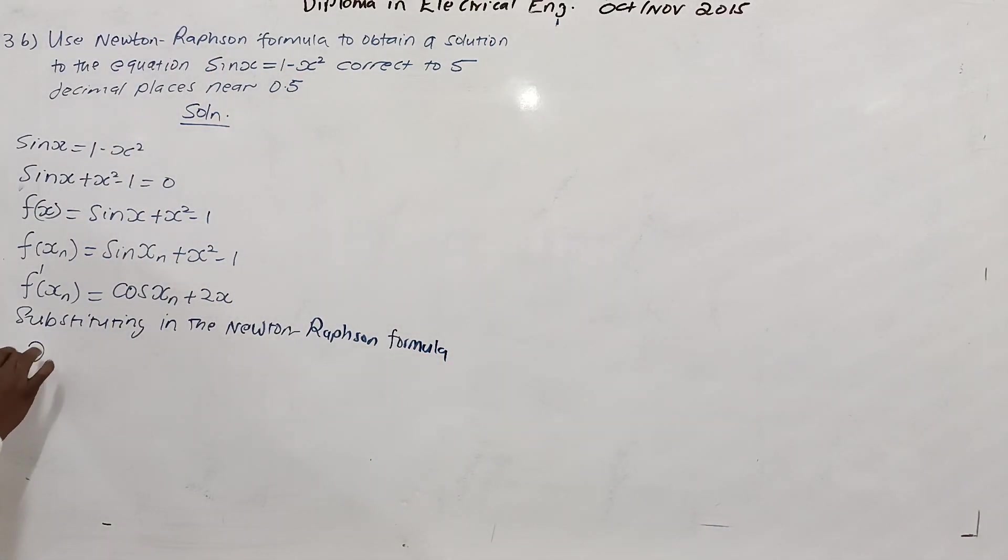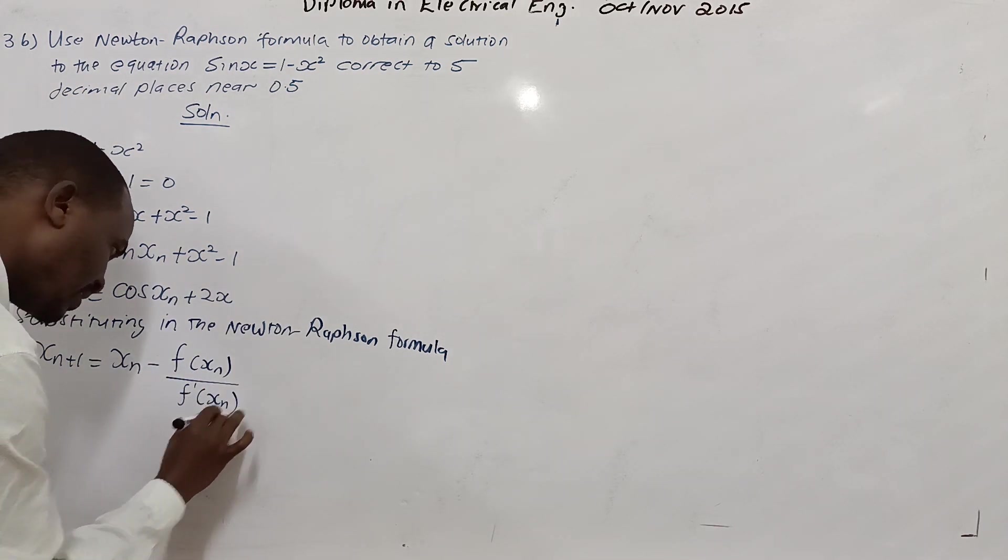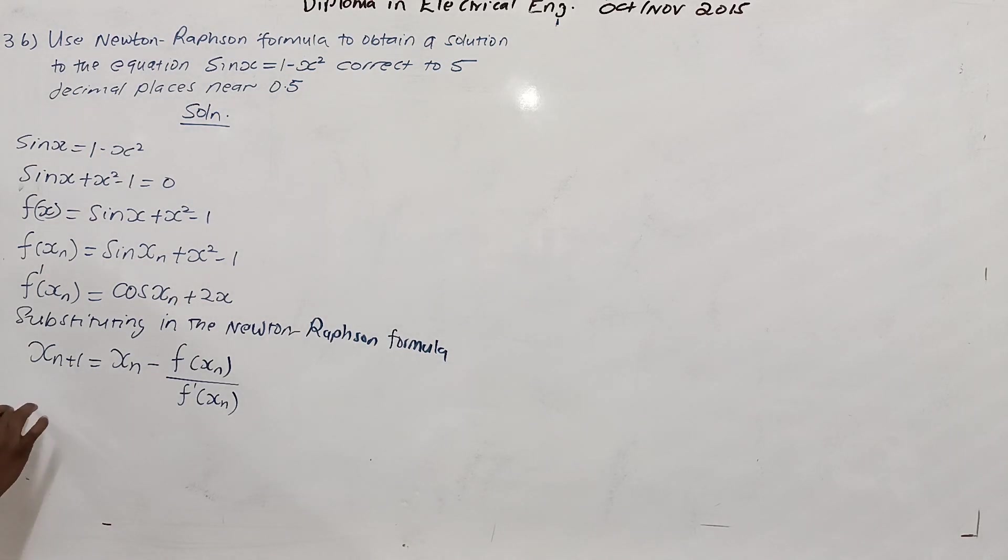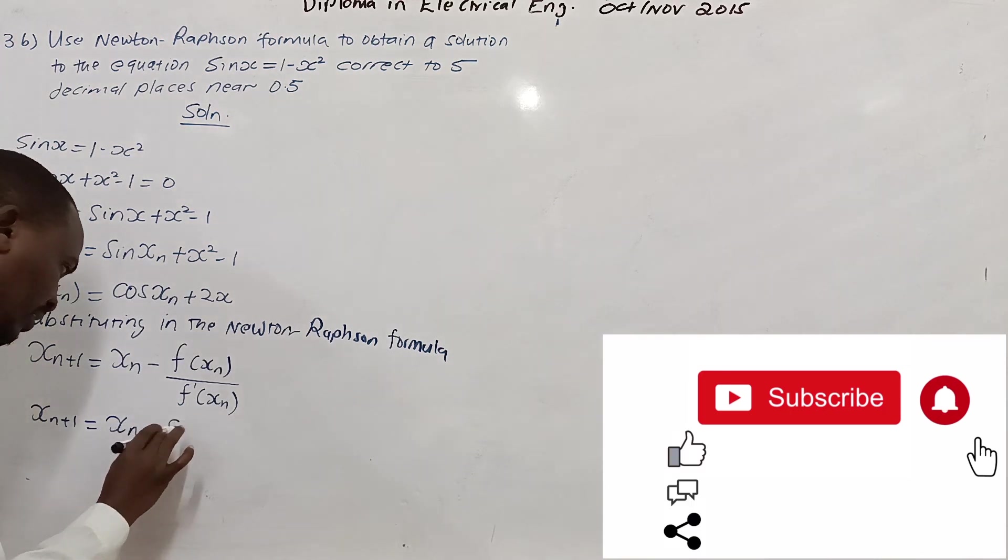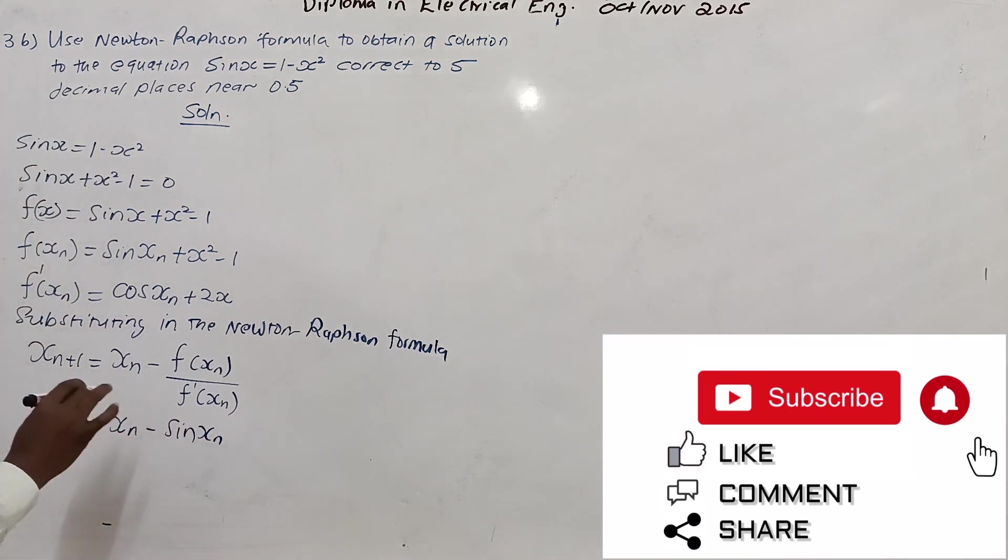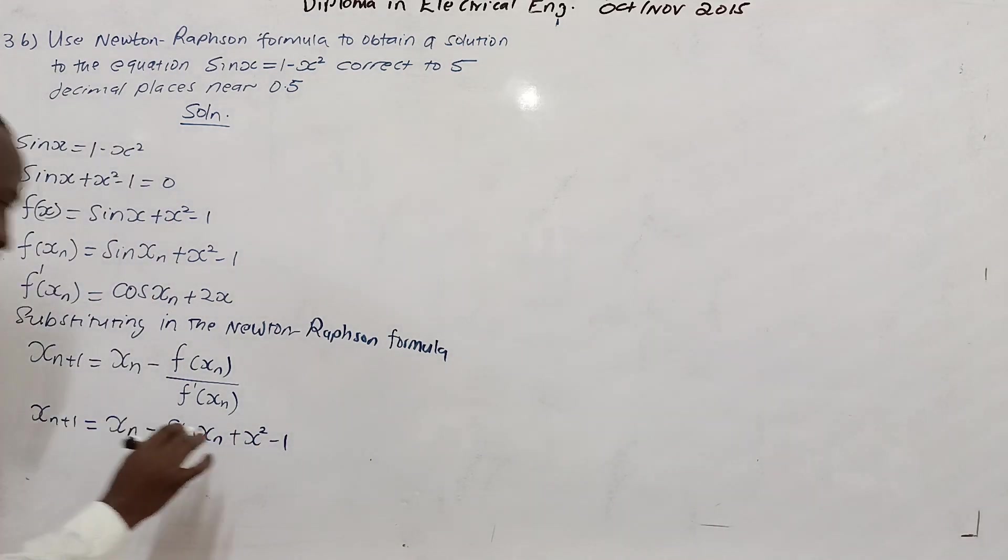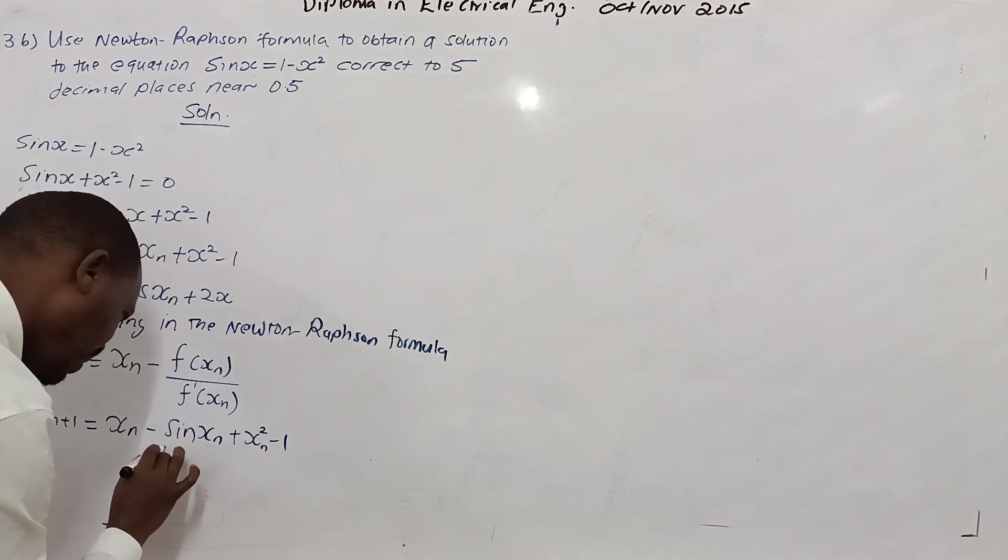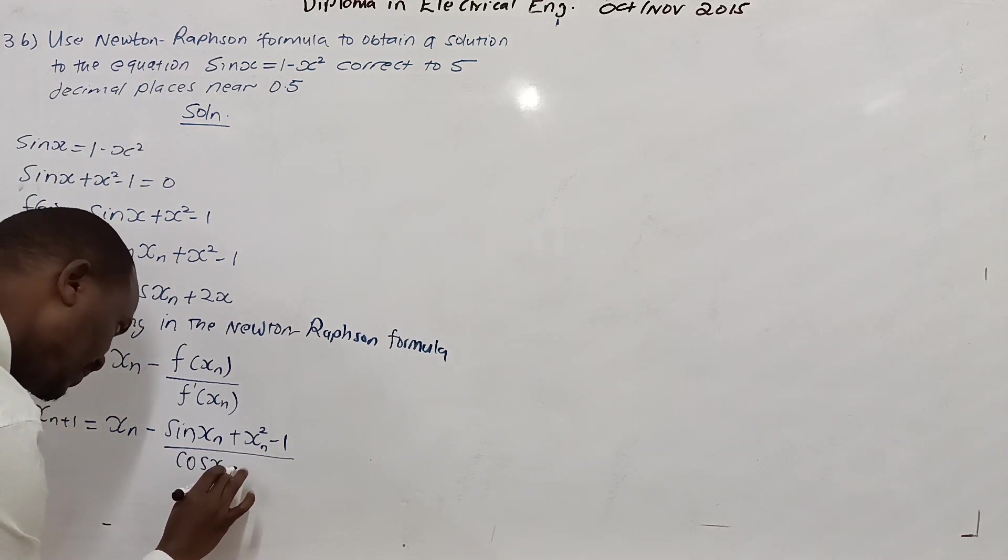Here we get, we know that xn plus 1 equals xn minus function of xn divided by the derivative of function of xn. We will write it: xn plus 1 equals xn minus sine xn plus xn squared minus 1, over cosine of xn plus 2xn.